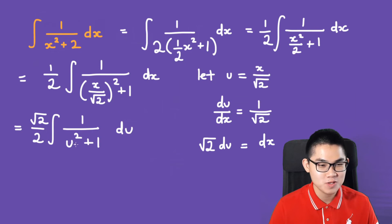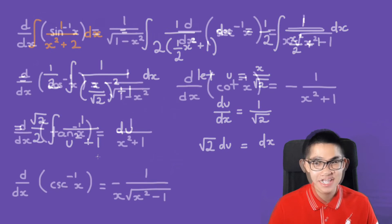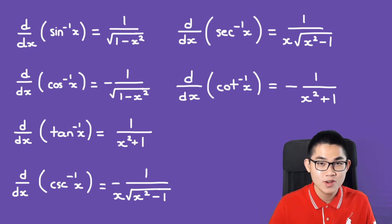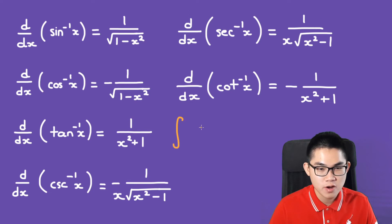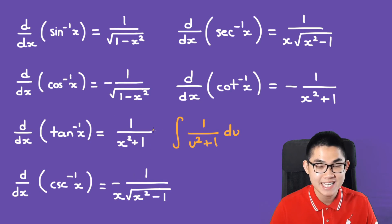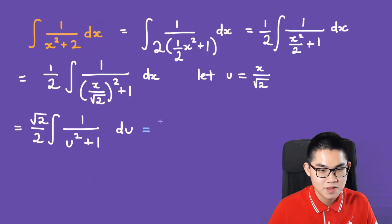From the formula sheet, the derivative of arctan(x) is 1 over x squared plus 1. So the integral of 1 over u squared plus 1 du is arctan(u) plus C. This gives us the square root of 2 over 2 times arctan(u) plus C.